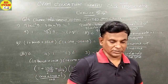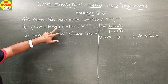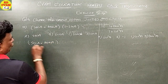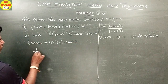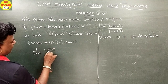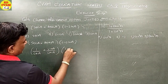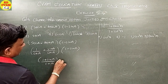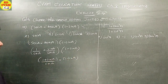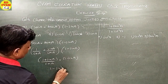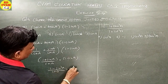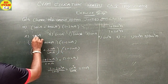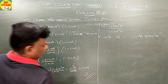Question 4 part 3: (sec A plus tan A)(1 minus sin A). Convert to basic form: (1 upon cos A plus sin A upon cos A) times (1 minus sin A). This becomes (1 plus sin A) upon cos A times (1 minus sin A), giving (1 minus sin squared A) upon cos A, which equals cos squared A upon cos A, that is cos A. The answer is option D.